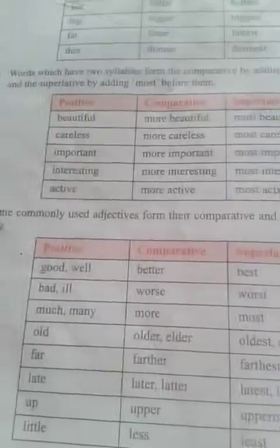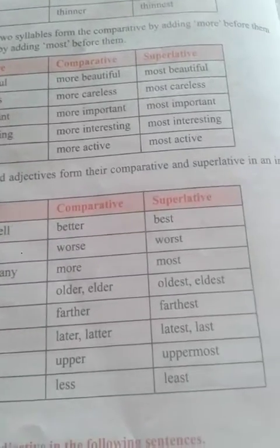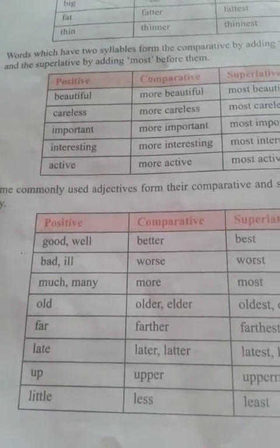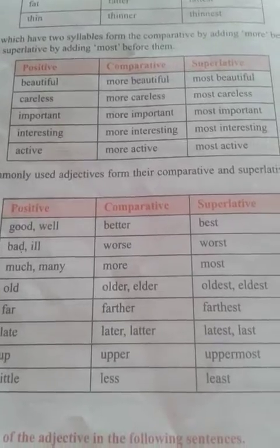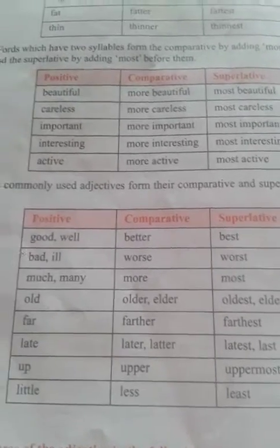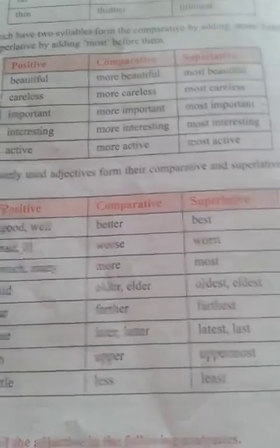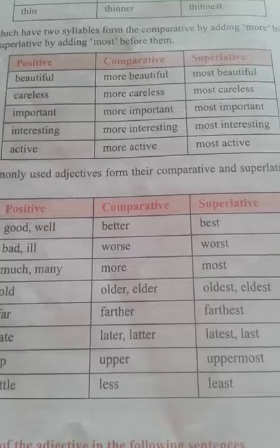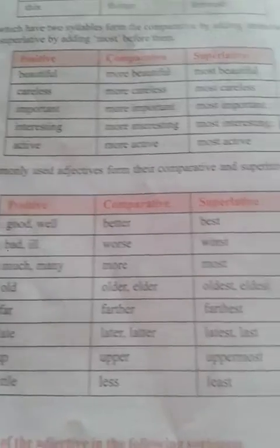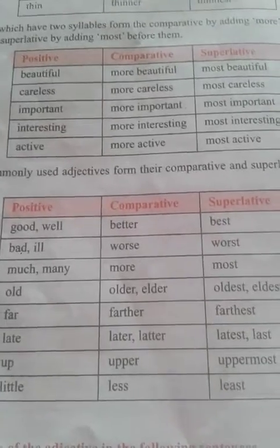Some commonly used adjectives form their comparative and superlative in an irregular way: good/well — better — best; bad/ill — worse — worst; much/many — more — most; old — older/elder — oldest/eldest; far — further — furthest; late — later/latter — latest/last; up — upper — uppermost; little — less — least.